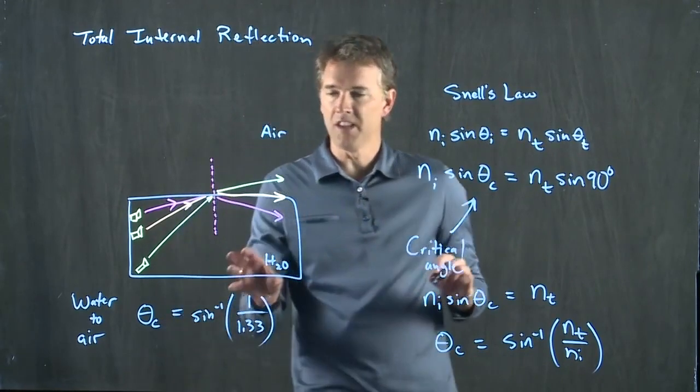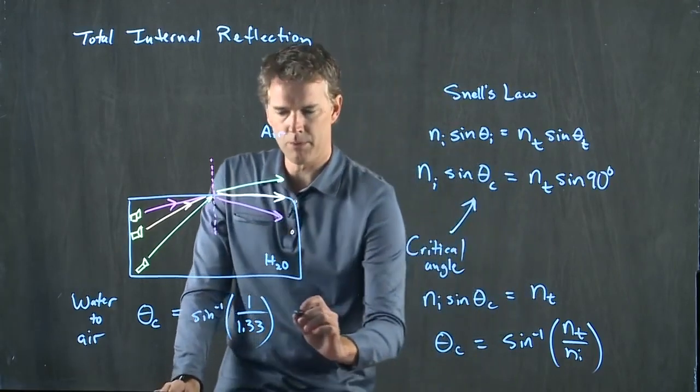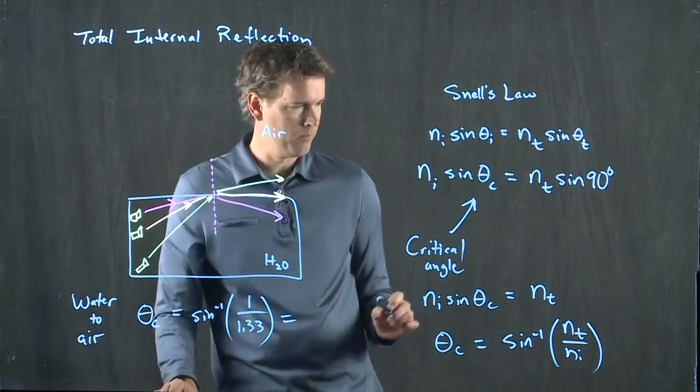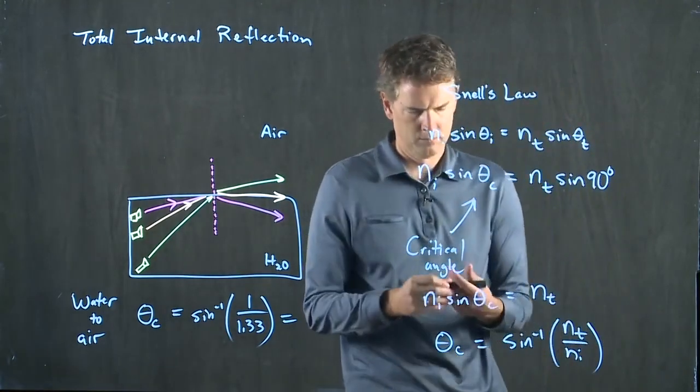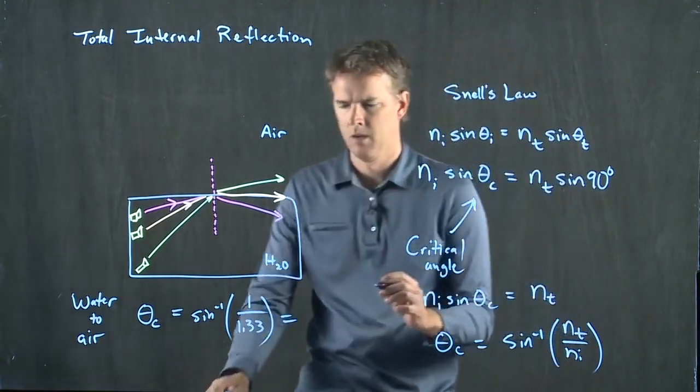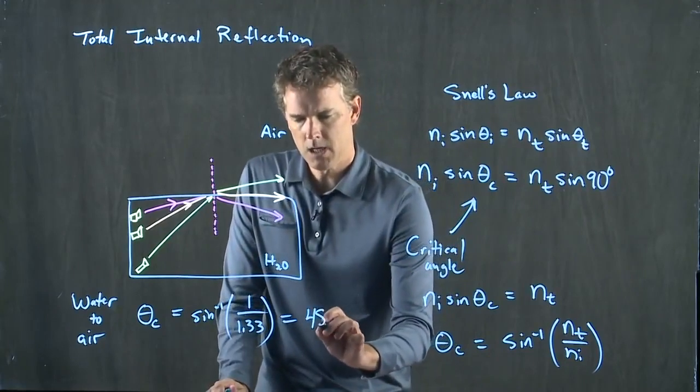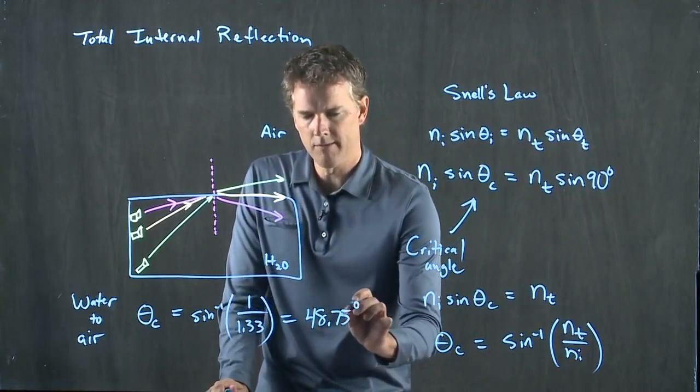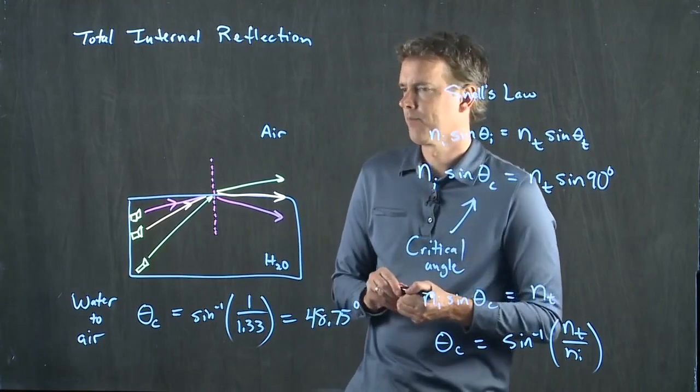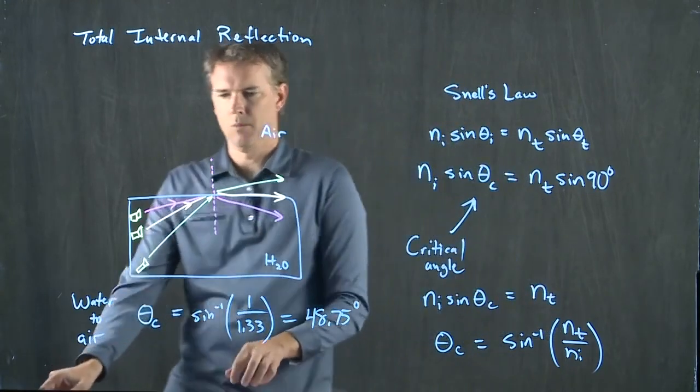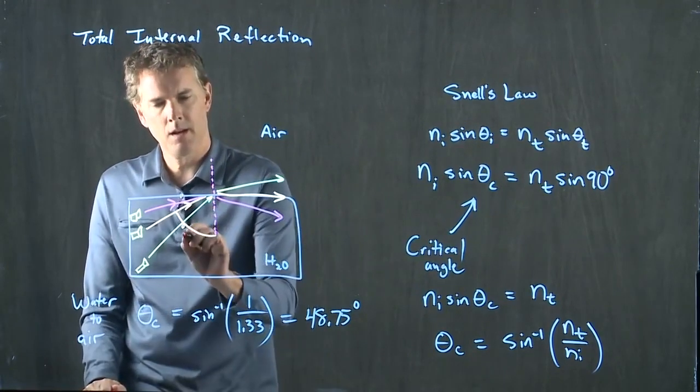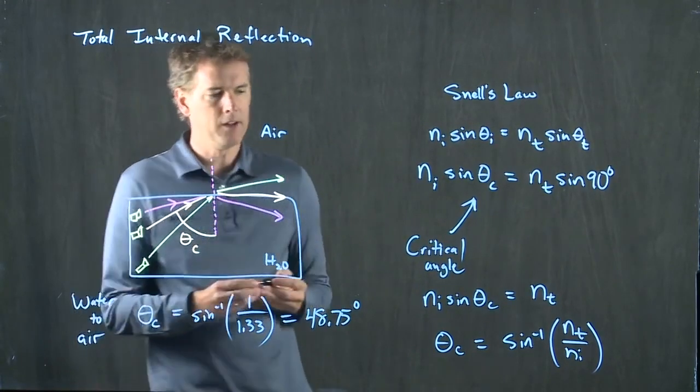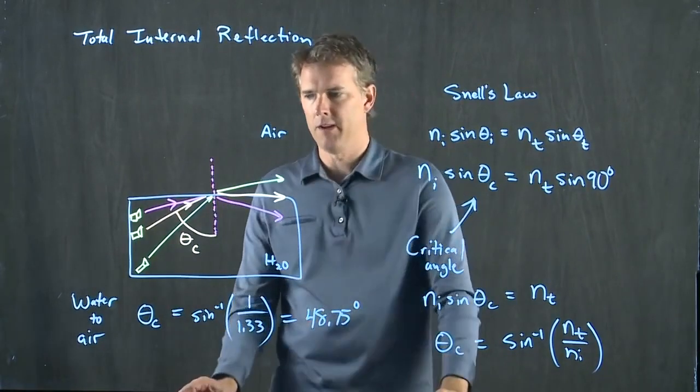So what is the arc sine of one over 1.33? Sean, do you have a number for us? 48.75. 48.75 degrees. So this orange one, which is at the critical angle, is 48.75 degrees.